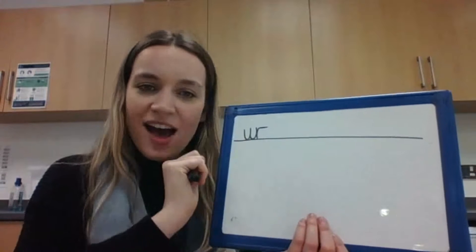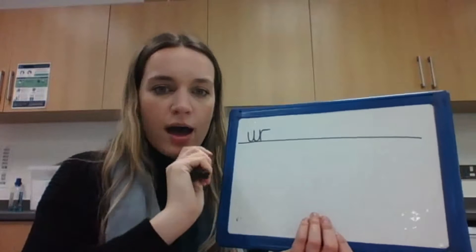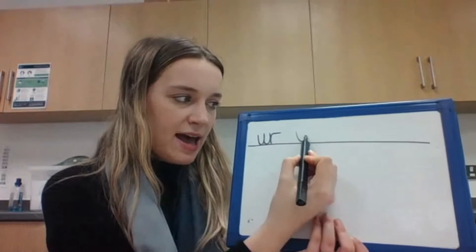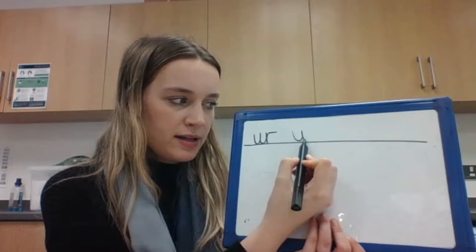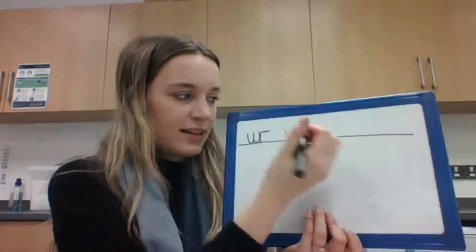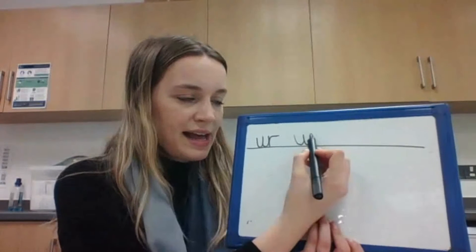So we start with our U - we go under the umbrella, down to the puddle, lead out. And then we've got our R - we start at the top of the letter, down the robot's body, up and curl to lead out.